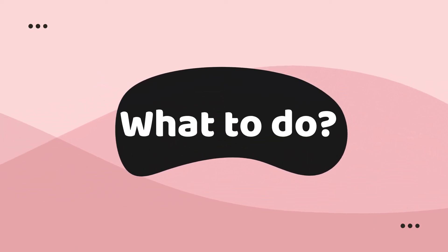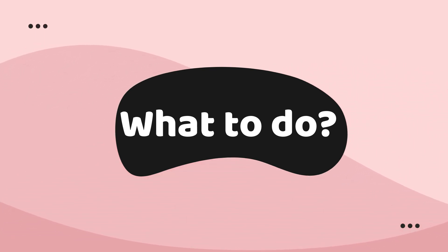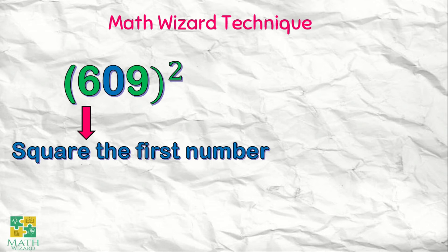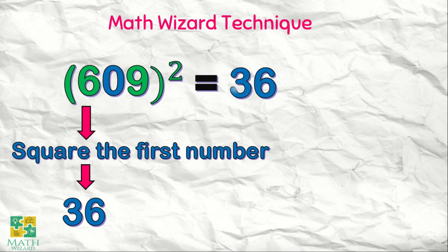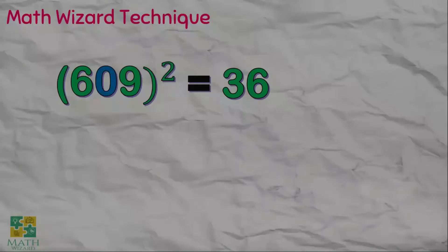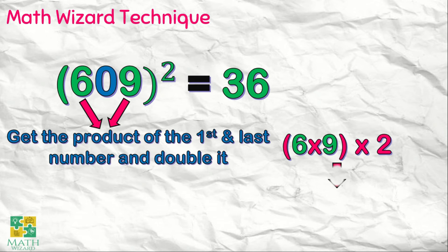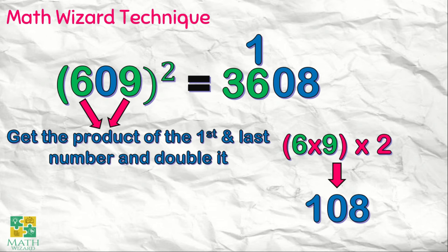What do we do if the answer in the second step is a three-digit number? For example, we have 609. The first step: square the first number. The square of six is 36. For the second step, we get the product of the first and last number and double it. Six times nine is 54, times two — we have 108. How do we write that? The one gets carried over, so it becomes one plus thirty-six, which makes thirty-seven.